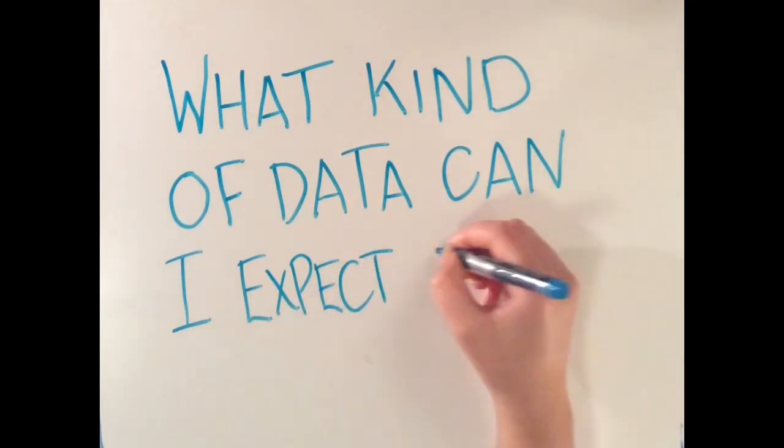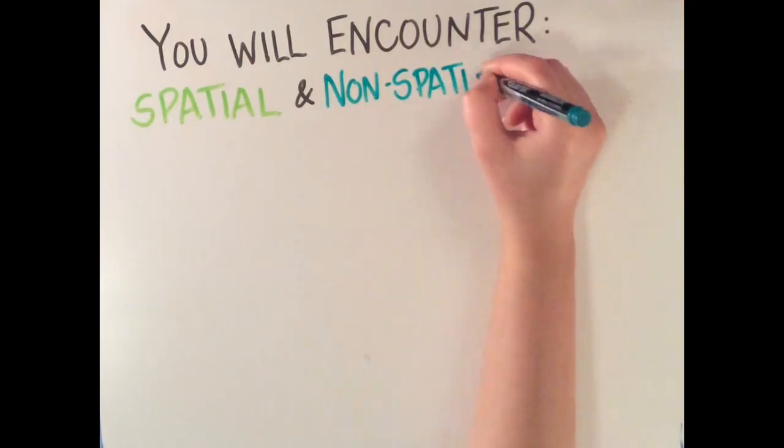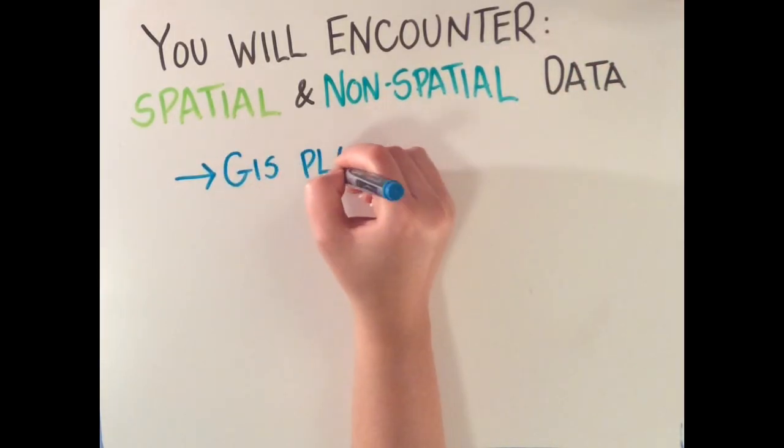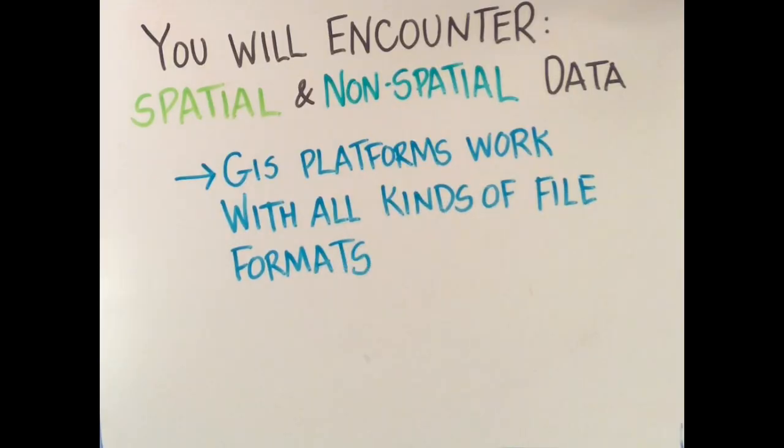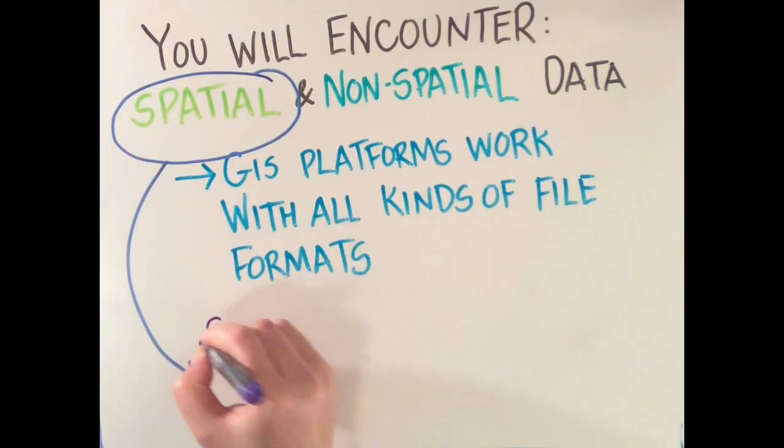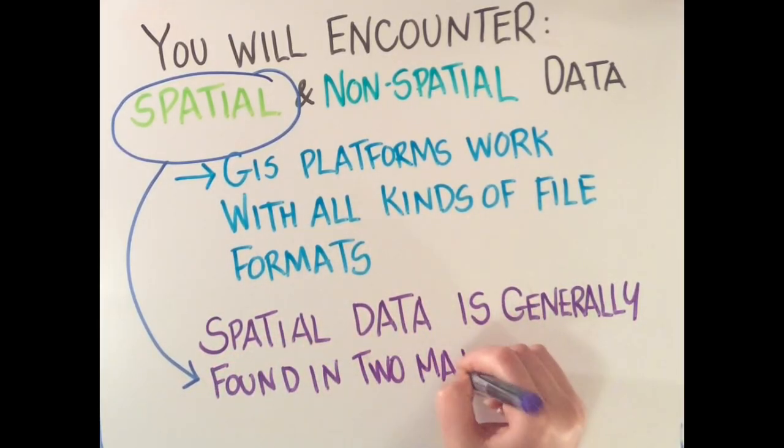What kind of data can I expect to see? GIS platforms can analyze both spatial and non-spatial data. GIS platforms have the ability to analyze many types of data that come in a variety of file formats. Before diving into the world of GIS, it is important to understand the two major types of spatial data file formats you will see so that you understand the kind of data you'll be working with. These two forms are vector and raster.